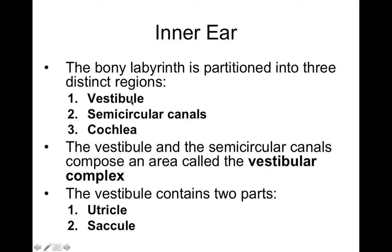The cochlear duct also projects off the vestibule and is involved in sound reception. Within each macula associated with the utricle and saccule, you find hair cells — basically a modified epithelium with sensory receptors for equilibrium. Each hair cell has stereocilia and a kinocilium: specialized extensions of the cell, kind of like microvilli, that project out into a membranous structure that can move when your head moves.